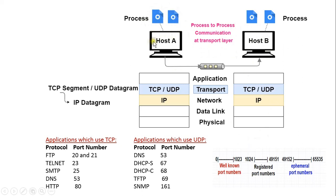Usually the server processes get port numbers belonging to the range 0 to 1023, which are the well-known port numbers, and the client processes get port numbers from the ephemeral port numbers range, from 49152 to 65535. Every process generated at the application layer is identified by a port number at the transport layer.